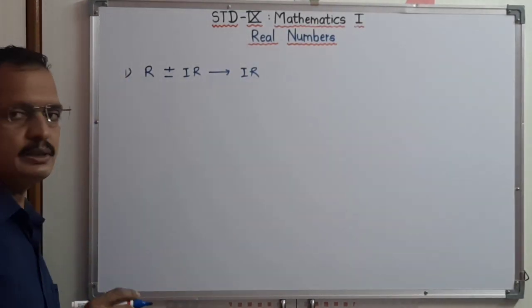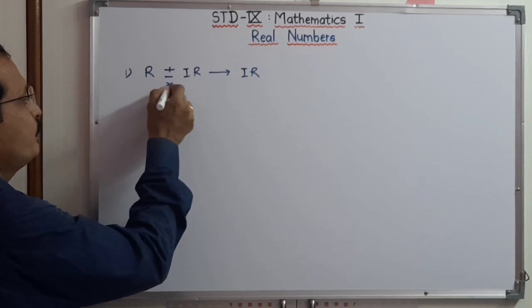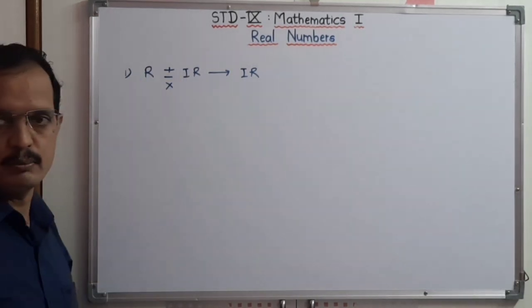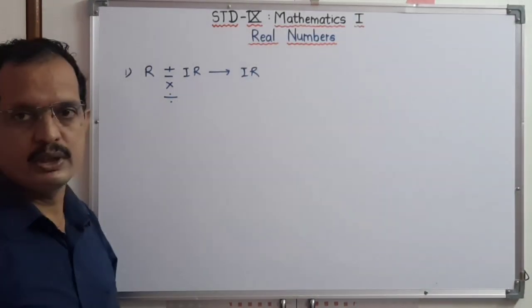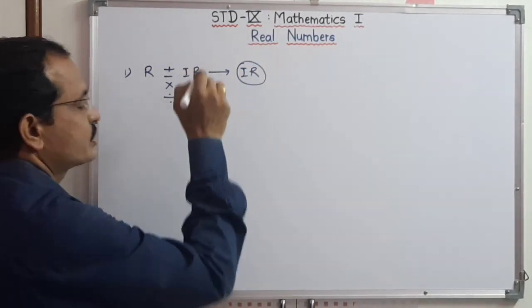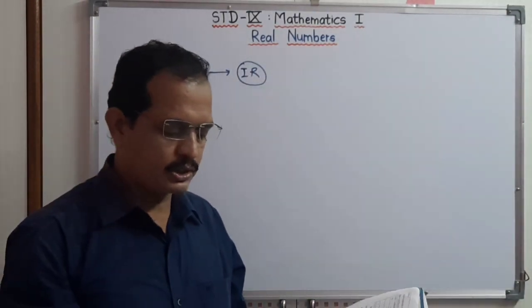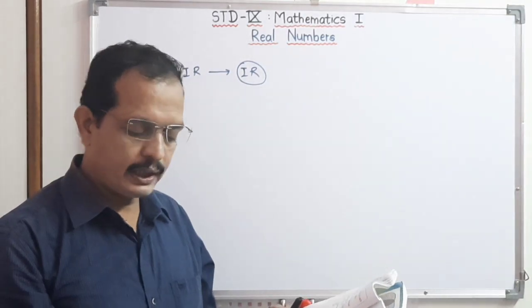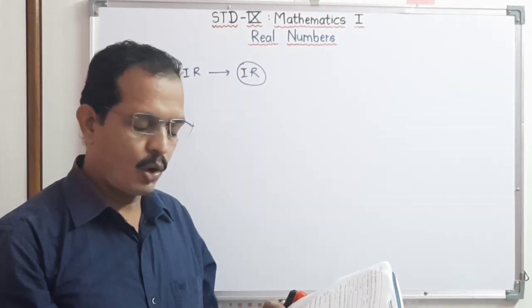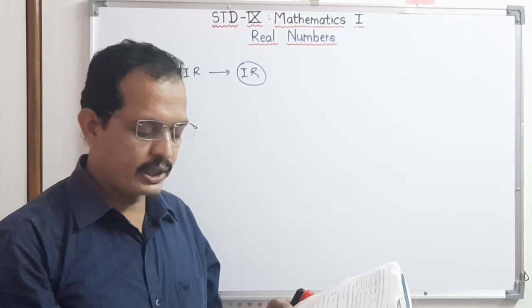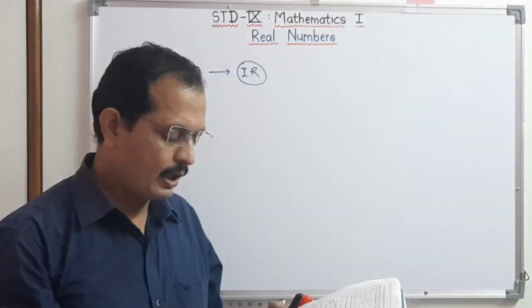This is the same for multiplication and division also. That means if we multiply or divide a rational number with an irrational number, the final answer is an irrational number. Therefore: addition or subtraction of a rational number with an irrational number is an irrational number. Second: multiplication or division of a non-zero rational number with an irrational number is also an irrational number.